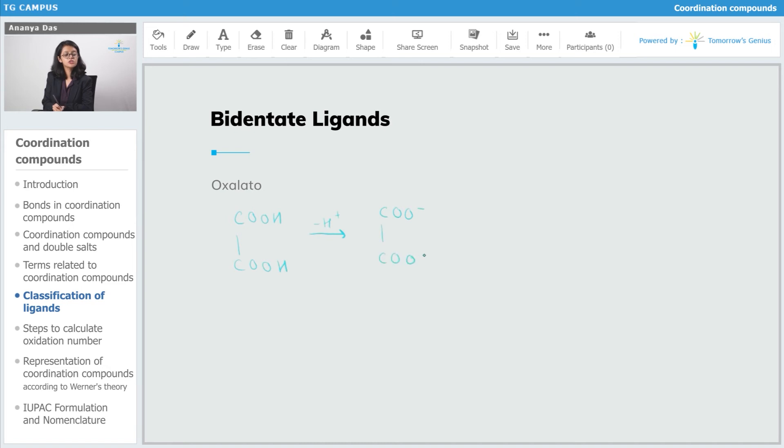In oxalato, the oxygen which has the negative charge is used for binding to the metal. As you can see, there are two oxygens and both of them have negative charge. Both of these oxygens can be used for binding to the metal at the same time, thereby giving oxalate the bidentate status.